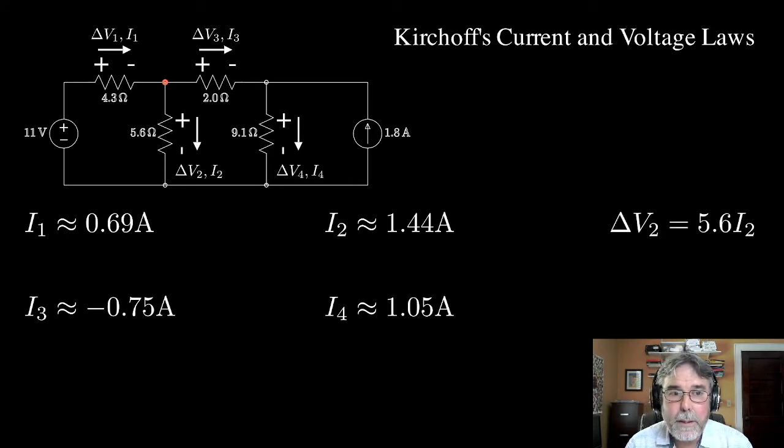So I'll just calculate delta V2. Of course, you can see from the picture, it's simply 5.6 times I2. Put in the value, 1.44 amps for I2, and I get 8.06 volts. I can do the same thing for the other node that's going to turn red here. There he is, he's red.